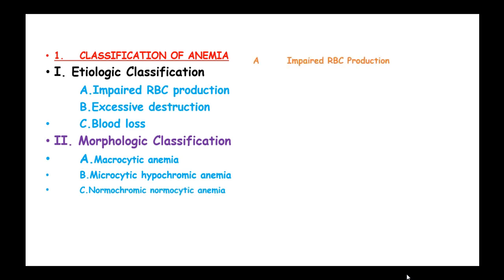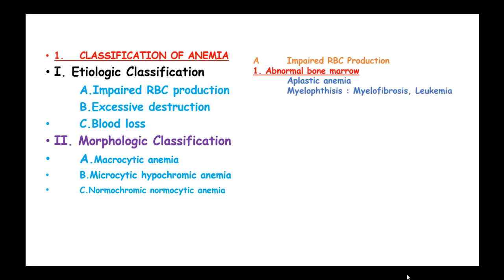Impaired red blood cell production can occur in cases of abnormal bone marrow, like in aplastic anemia, myelophthisis, myelofibrosis, and leukemia. We can also have essential factor deficiency which may impair cell production, like iron, vitamin B12, and folic acid.